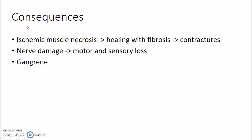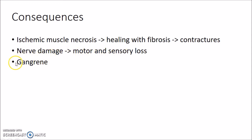Now let us see about the consequences of Compartment Syndrome. It can lead to ischemic muscle necrosis. The necrotic muscles undergo healing with fibrosis leading to contractures — a permanent shortening of muscle or joint. Compartment Syndrome can also lead to nerve damage causing motor and sensory loss, and in extreme cases can cause gangrene.